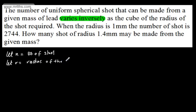I'm now going to set up an equation. The number varies inversely as the cube of the radius. So we can say n will be equal to k over the radius cubed, where k is the constant of proportionality, which we need to find.